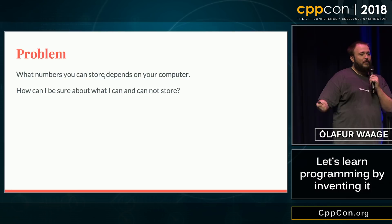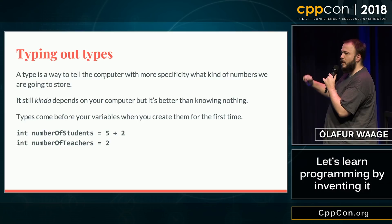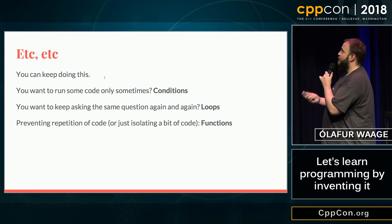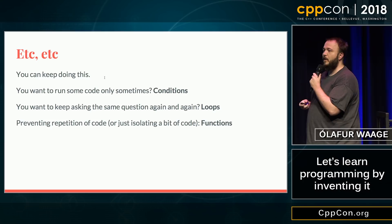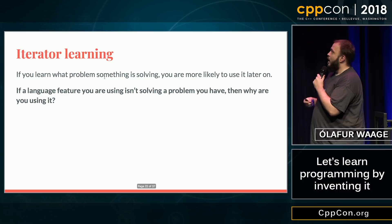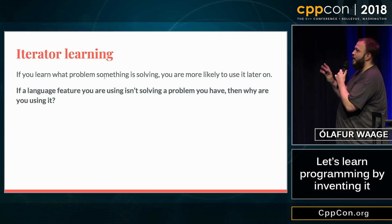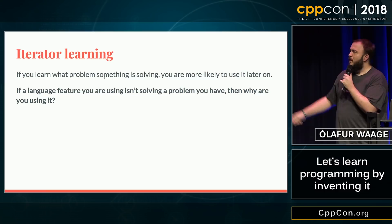The numbers you can store depend on your computer. If you want to be more sure about the type you have, we can use types — they depend on the computer but it's a little better, they come before the variable name. We can keep doing this: conditions to run code sometimes, loops to keep asking the same question, functions to prevent repetition of code. This is what I call iterative learning — you learn what problem something is solving, and if a language feature isn't solving the problem you have, why are you using it?